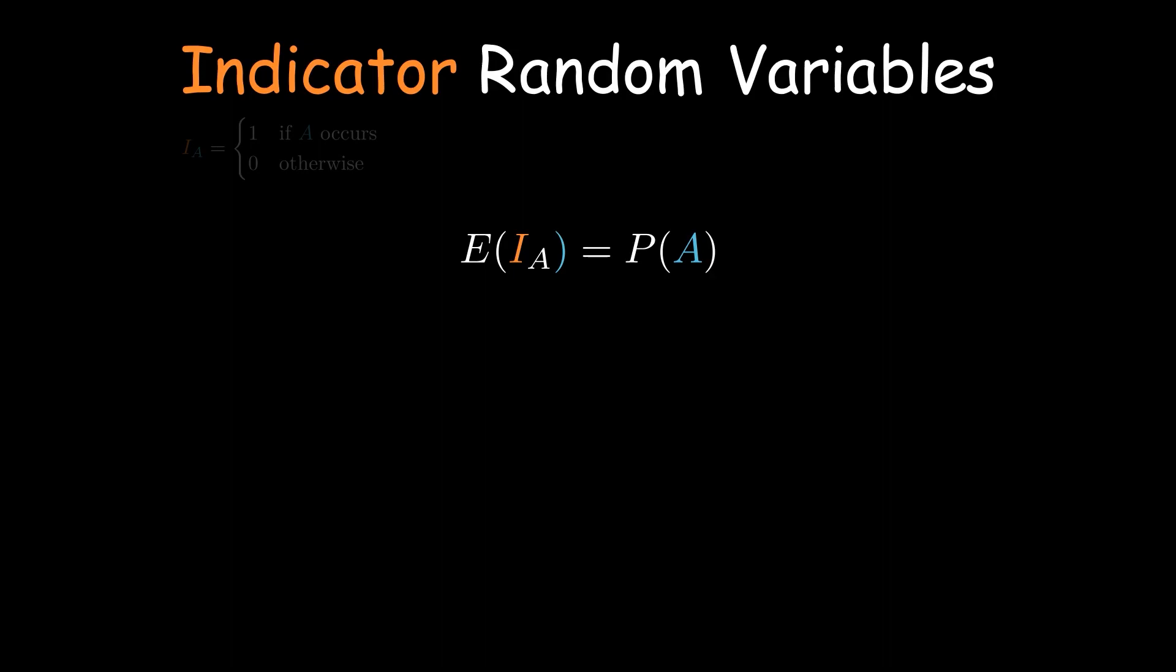Well, when the event A occurs, the indicator random variable outputs one, and when it doesn't, it outputs zero. We saw in a previous video on expected value that the expected value of a random variable is the sum of all possible values of the random variable weighted by their probabilities.